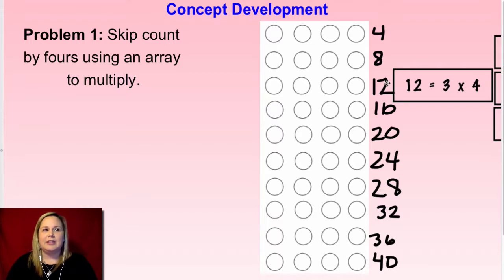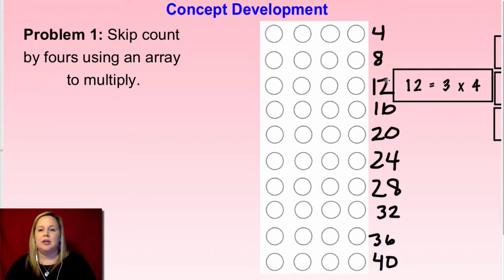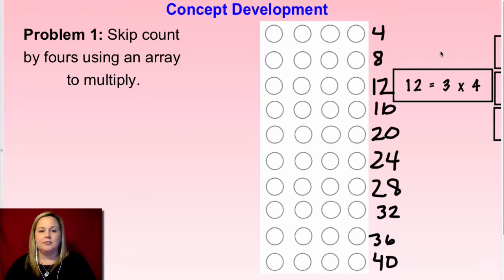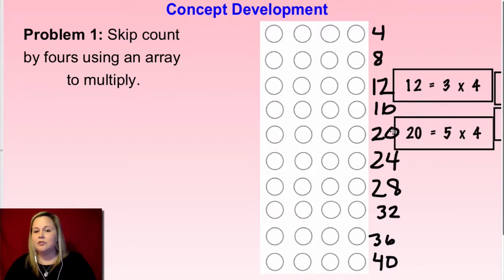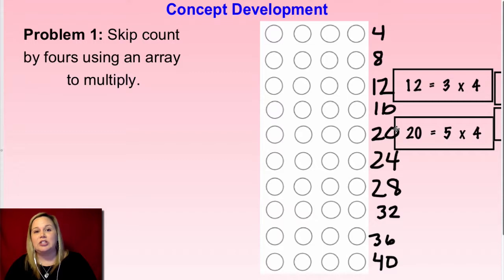Now I'll give you one — you're going to do the same thing: find the answer and write the multiplication expression that matches it. I'm going to say 20 — find and write the multiplication expression that matches 20 as the product. Here's what I came up with: 20 equals 5 times 4.